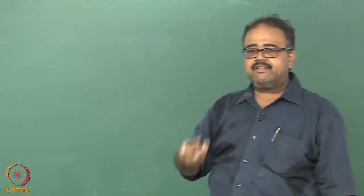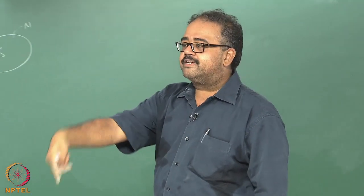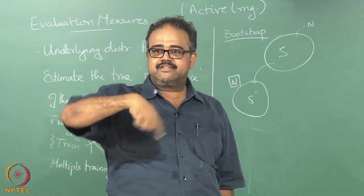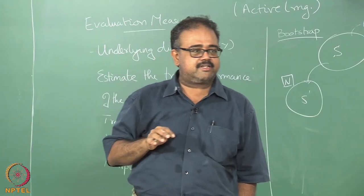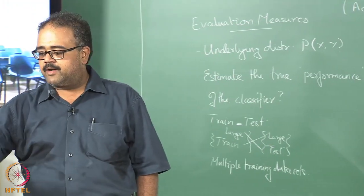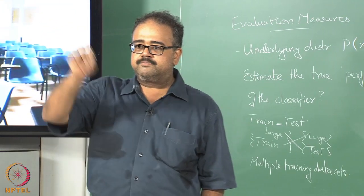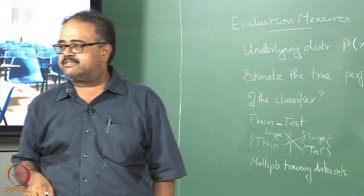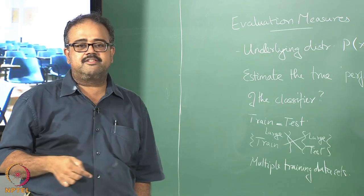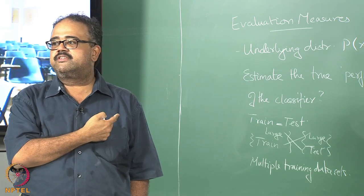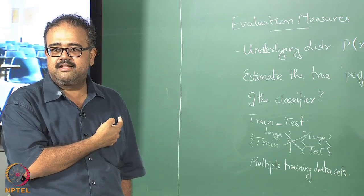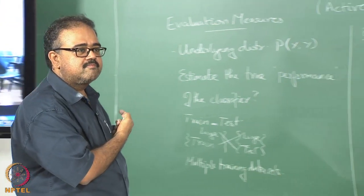Given the data, the best approximation I can construct to the underlying distribution is the discrete distribution defined on this data. If I do not make any other assumptions, all I can do is construct a discrete distribution on the data. The probability of sampling point x1 is equal to the number of times x1 appeared in set S divided by the size of S. So how do I simulate this distribution? Sample from S with replacement.